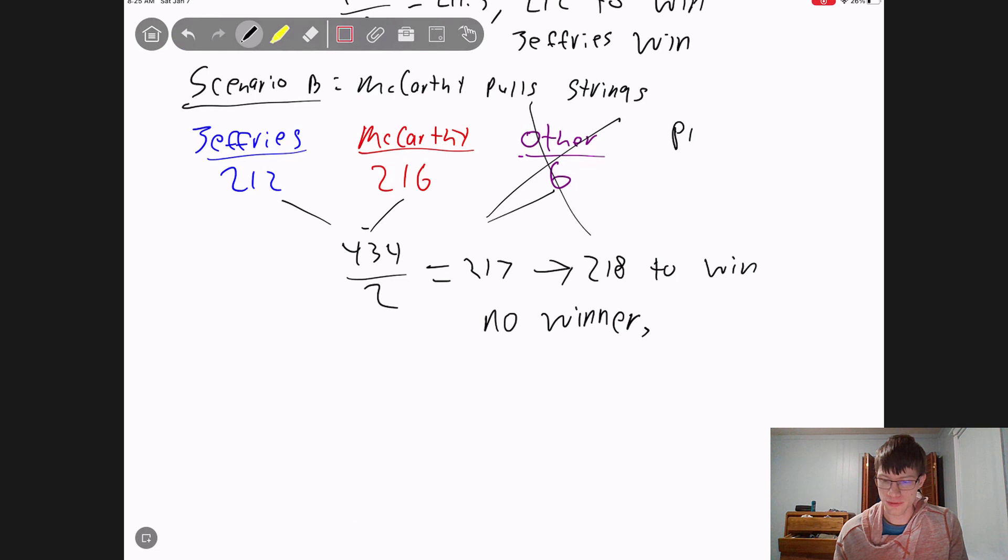So we actually had those six people who said they would never vote for McCarthy. They did not vote for other. They voted present, which basically gave the Speaker shift to McCarthy. So they could have stopped him.